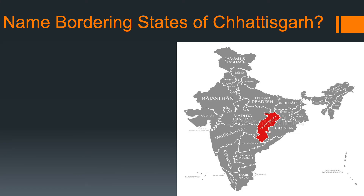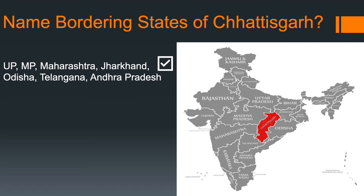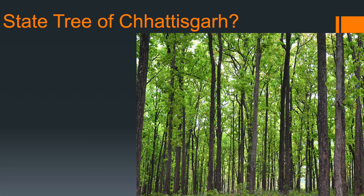Next: name the bordering states of Chhattisgarh. These are: Uttar Pradesh, Madhya Pradesh, Maharashtra, Jharkhand, Odisha, Telangana, and Andhra Pradesh. Next: what is the State Tree of Chhattisgarh? Answer: Sal Tree.